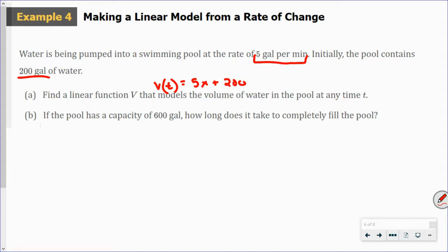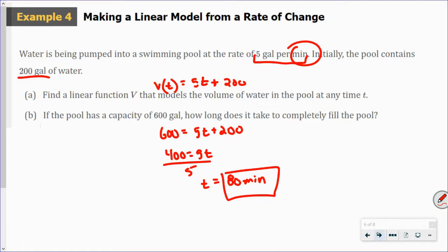If the pool has a capacity of 600 gallons, how long does it take to completely fill the pool? So, your volume is going to be 600, 5T plus 200. So, you're going to subtract the 200. 400 equals 5T. Divide by 5. And T equals 80. So, it's going to take 80 minutes to fill this pool. You've got to come back up here and look at your label for the correct label. So, 80 minutes to fill this pool.